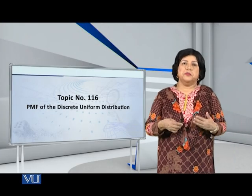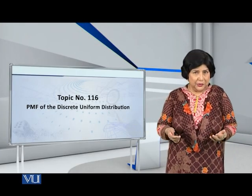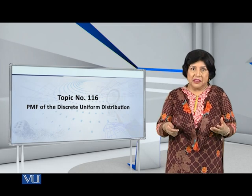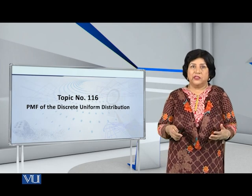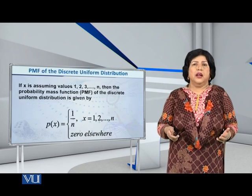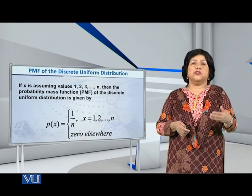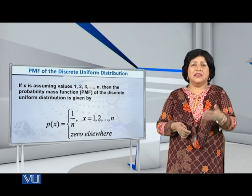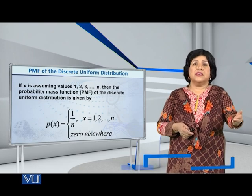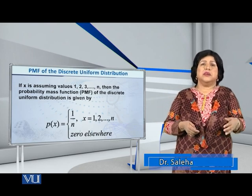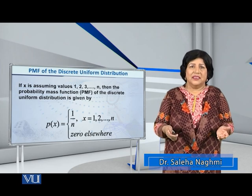Dear students, let me present to you and discuss with you the PMF of the discrete uniform distribution. Well, in the simple case when the random variable x assumes values 1, 2, 3, so on, up to n, the PMF is very simply written as follows.